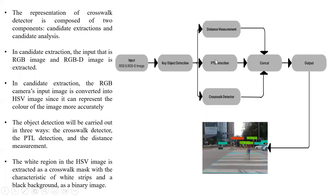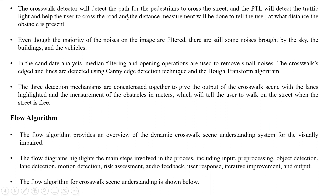The block diagram of the dynamic crosswalk scene understanding is shown here. The crosswalk detector is composed of two components: candidate extraction and candidate analysis. In candidate extraction, the input RGB image and RGBD image are extracted, and the RGBD image is converted into an HSV image, which can represent the color of the image more accurately. Object detection is carried out in three ways: crosswalk detector, PTL detection, and distance measurement. The white region in the HSV image is extracted as a crosswalk mask with characteristics of white and black strips as a binary image. The crosswalk detector detects the path for pedestrians, the PTL detects the traffic light to help the user cross, and distance measurement tells the user how far obstacles are.